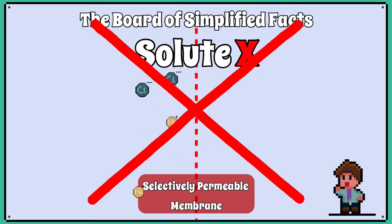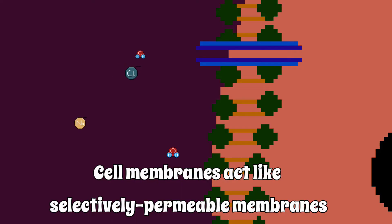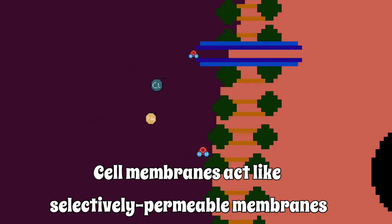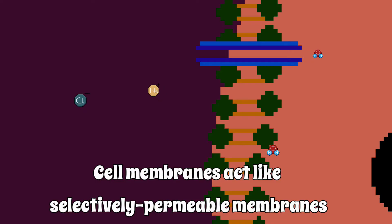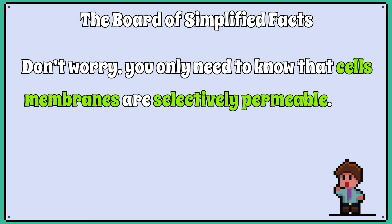Without a selectively permeable membrane, osmosis won't occur. Cell membranes act like selectively permeable membranes because water is small enough to pass through the membrane, and additionally they have special pores to let water through called aquaporins. You only need to know that cell membranes are selectively permeable.